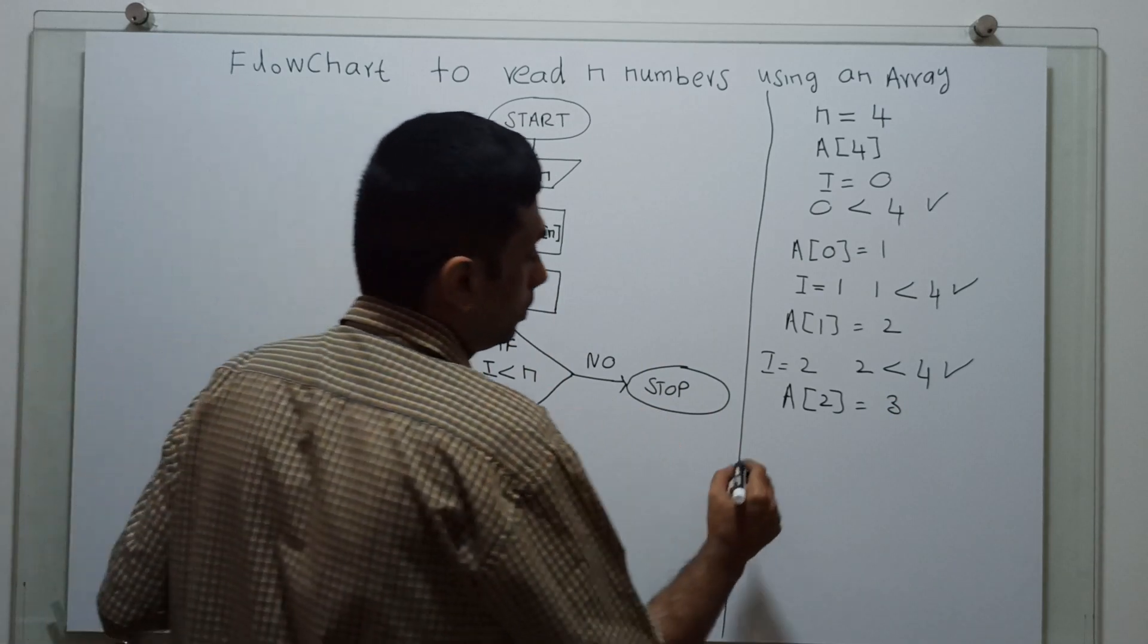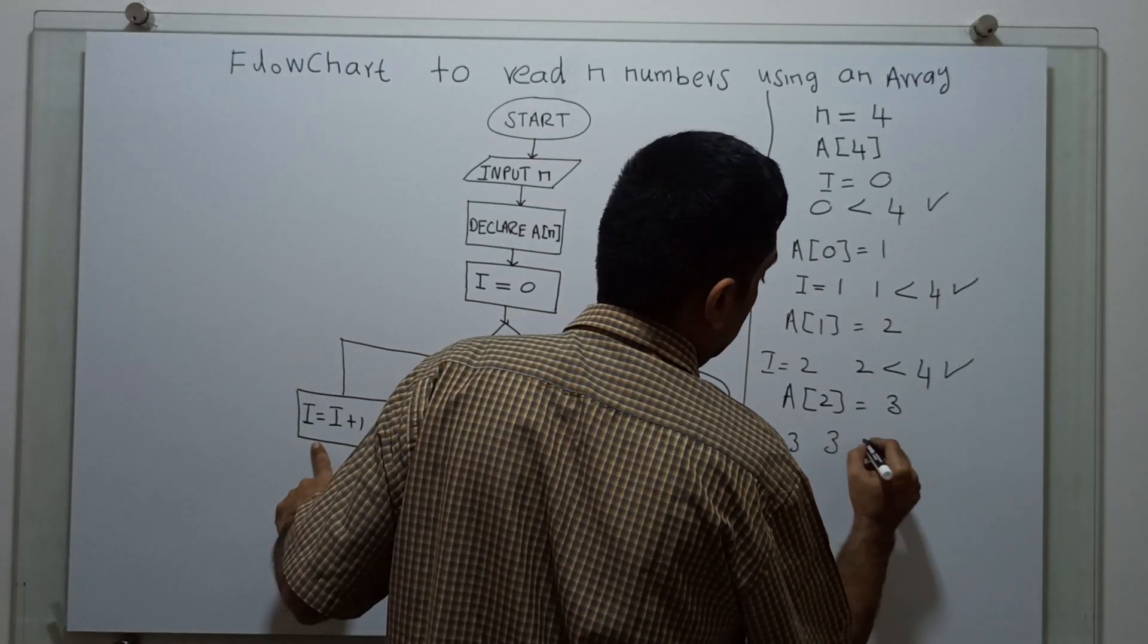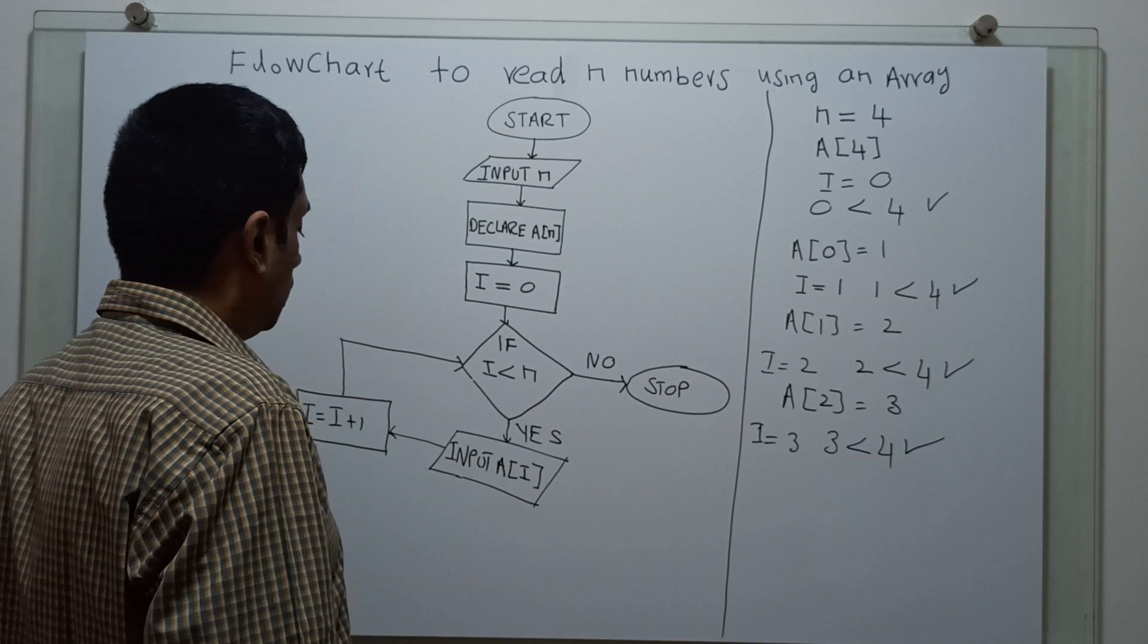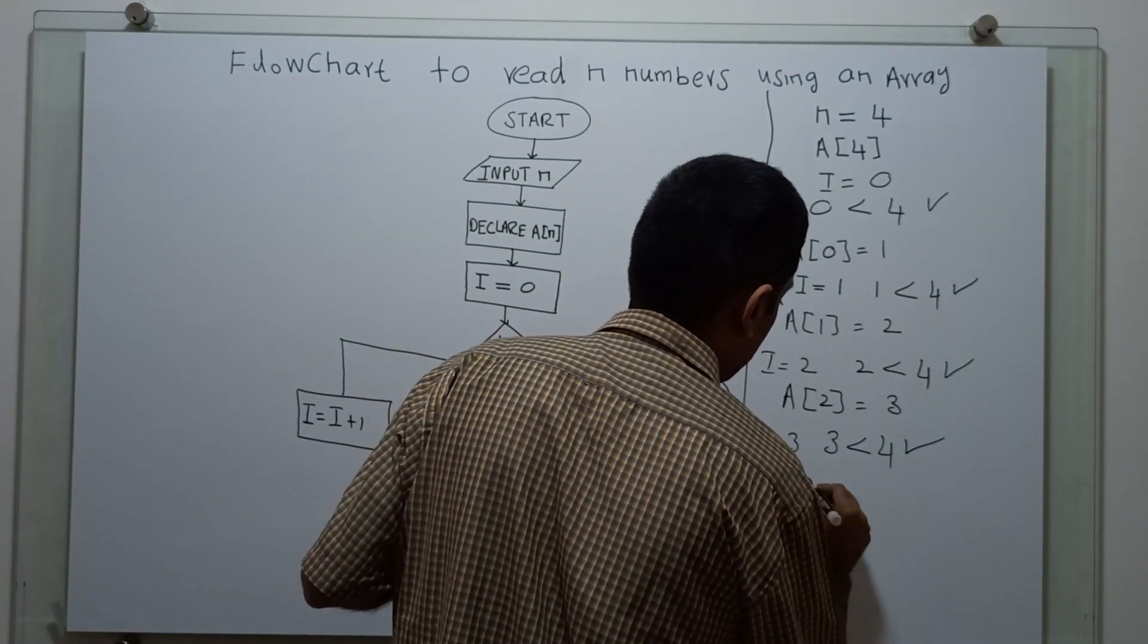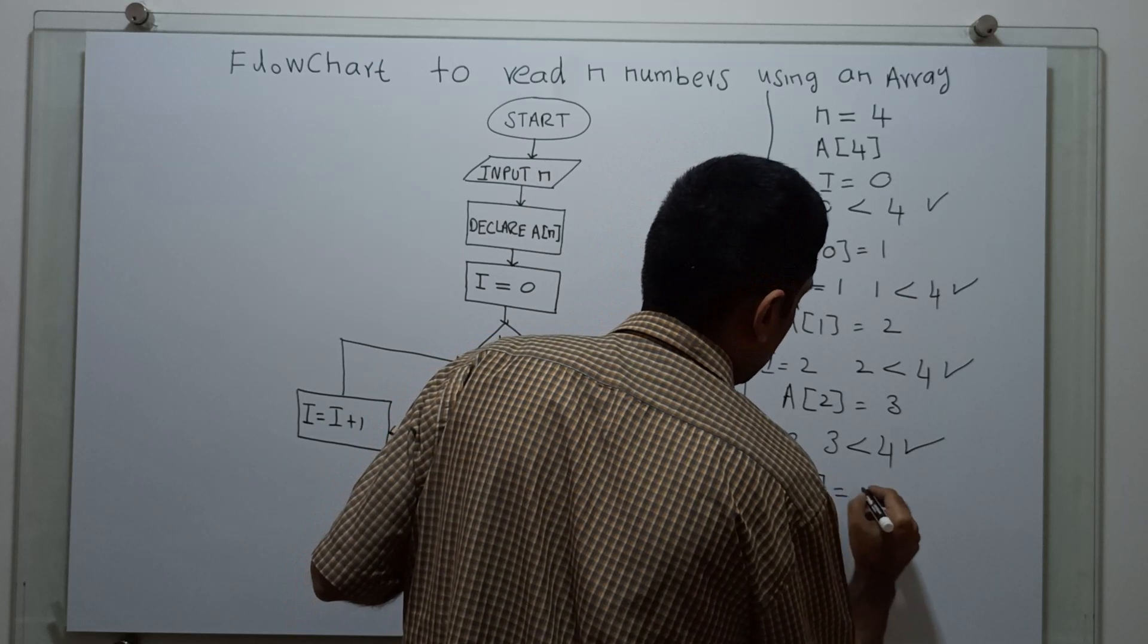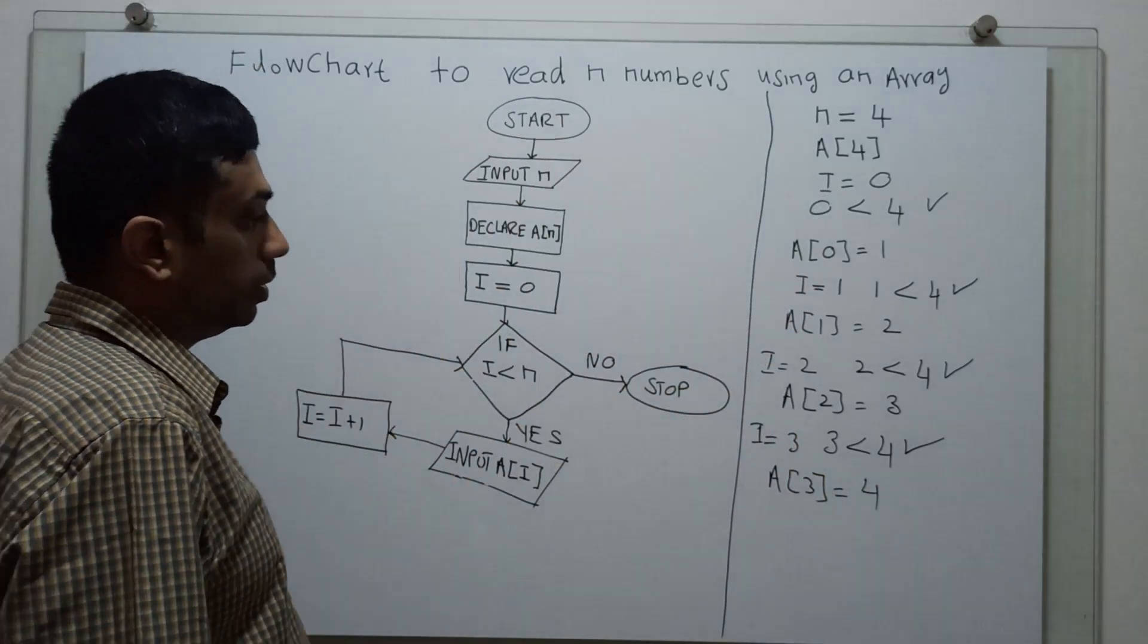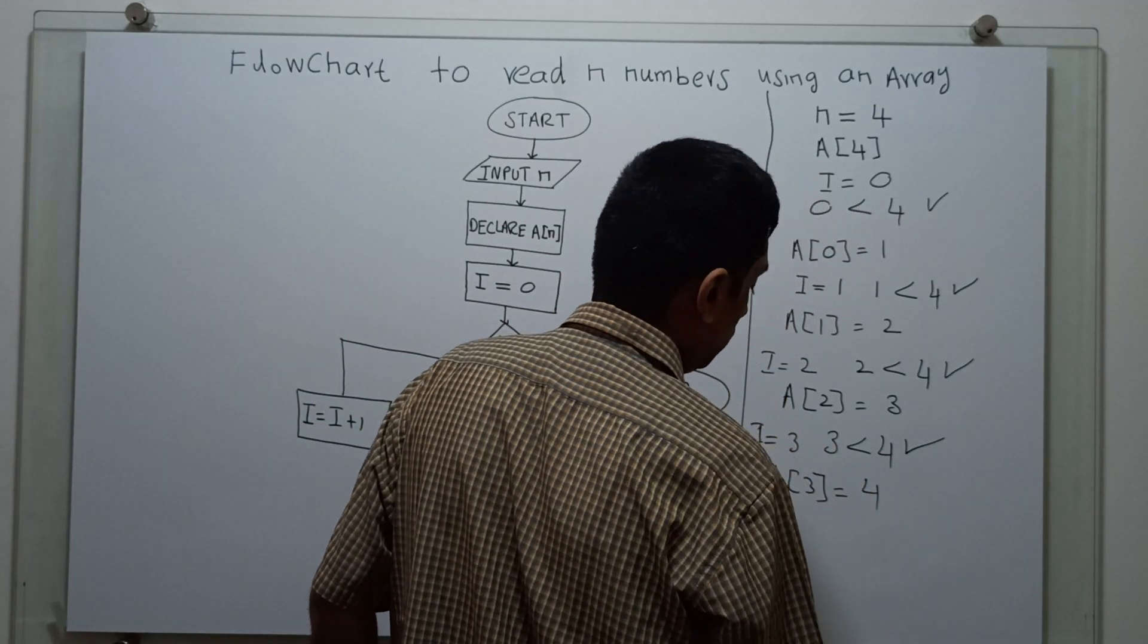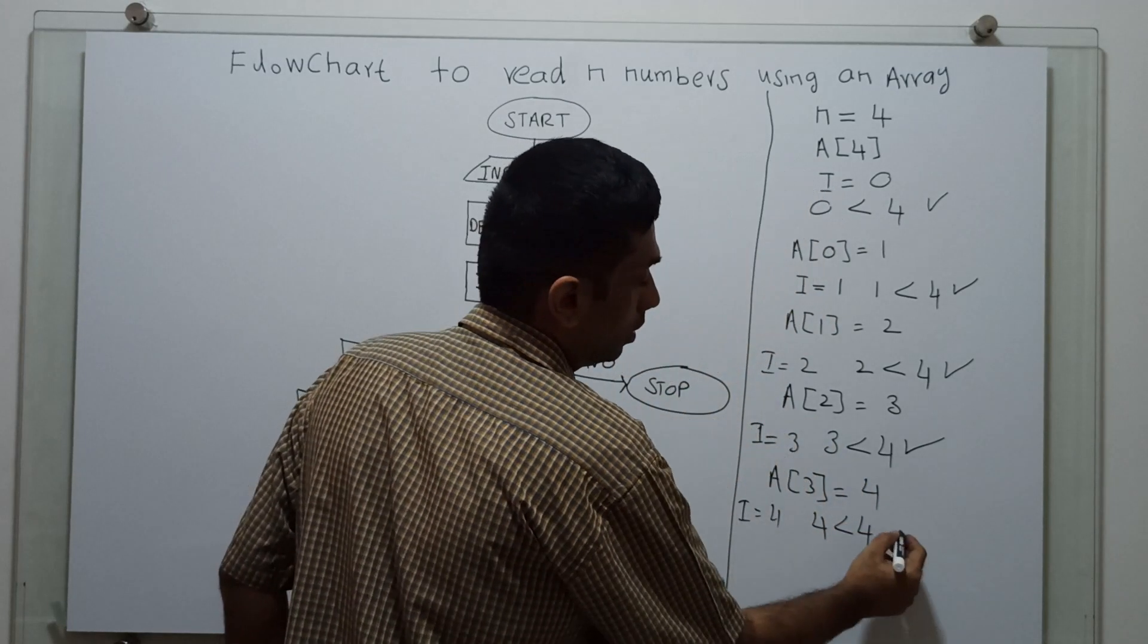2 less than 4. Then I am inputting a of i, a of 3. I am giving it as a 4. Now, i equal to i plus 1. I is become 4 now. 4 less than 4 is false.